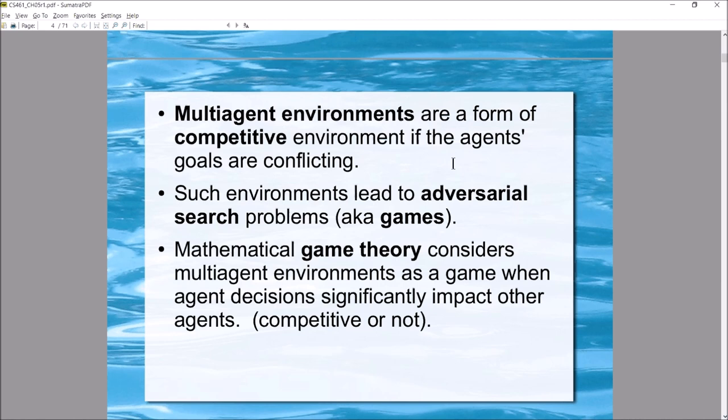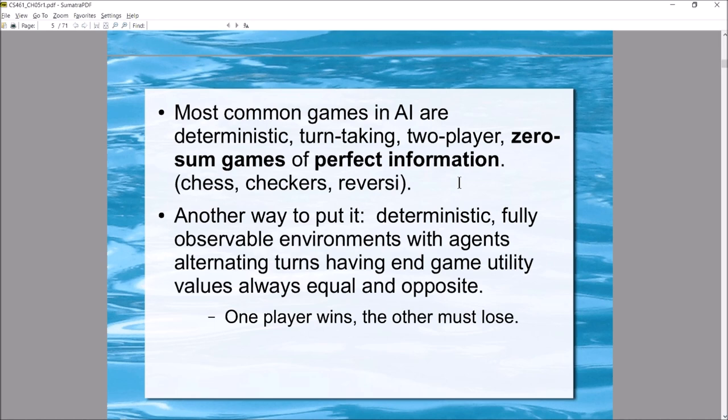In mathematical game theory, it's called a game if you have multiple agents in an environment and the decisions each agent makes can impact other agents — whether they're competing or cooperating doesn't matter. In the context of AI, however, most of the time what we're talking about are games specifically defined by competition.